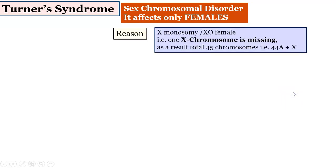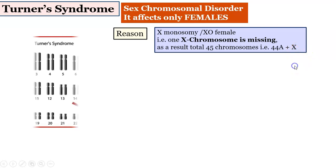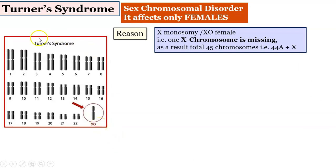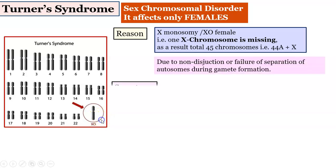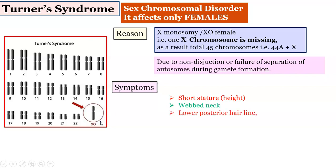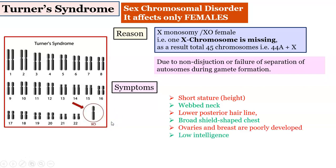Turner syndrome is a sex chromosomal disorder observed only in females. The reason is X monosomy — instead of two X chromosomes, only one X chromosome is present. The total number of chromosomes becomes 45: 44 autosomes and only one X chromosome. In the karyotype, you can see all 22 pairs of chromosomes but only one sex chromosome, with the other missing. Symptoms include short stature, webbed neck, lower posterior hairline, broad shield-shaped chest, poorly developed ovaries and breasts, and low intelligence.